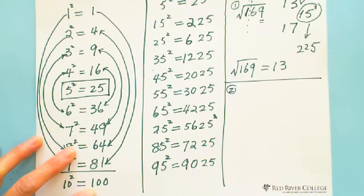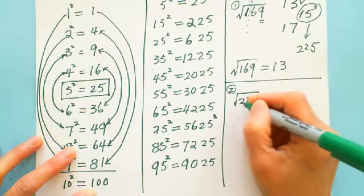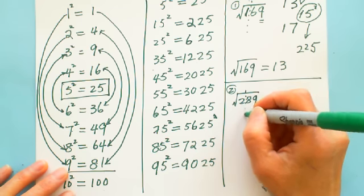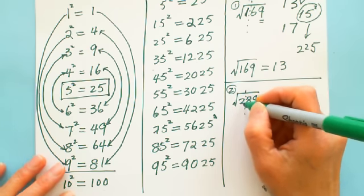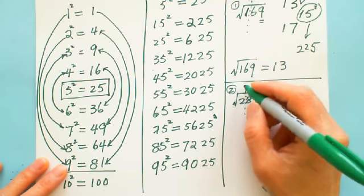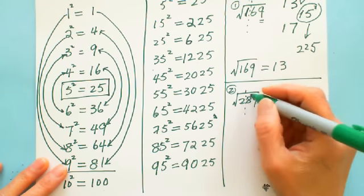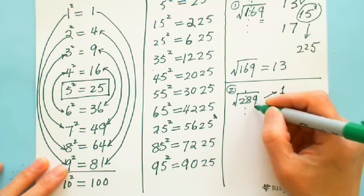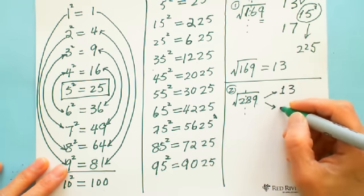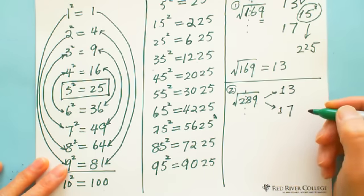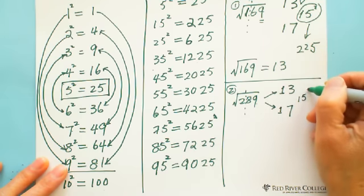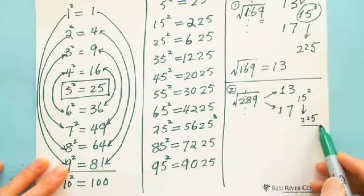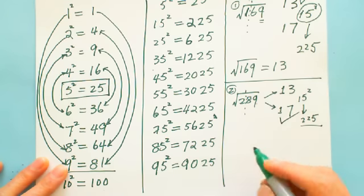Second example: what is the square root of 289? Same approach — split from right: 2 | 89. Which number squared is close to 2? Only 1, since 2 squared equals 4. So the first digit is 1. Last digit is 9, so it's either 13 or 17. We check 15 squared equals 225, and 289 is greater than 225, so the square root of 289 is 17.